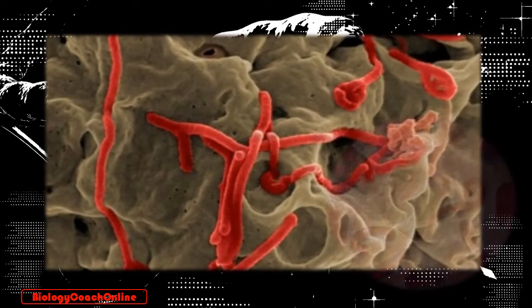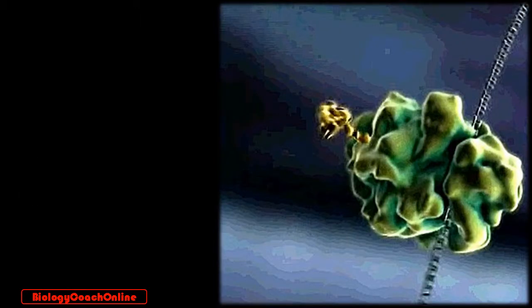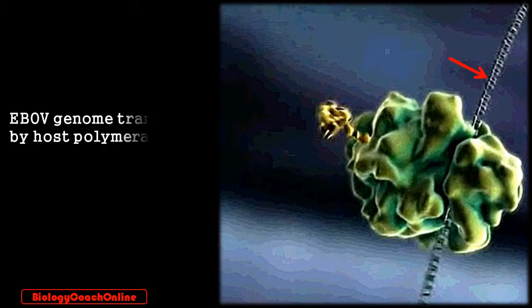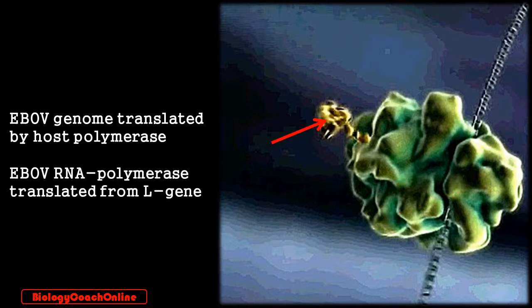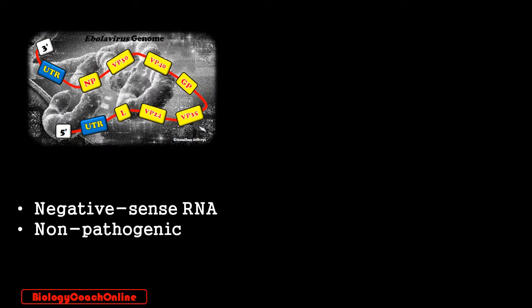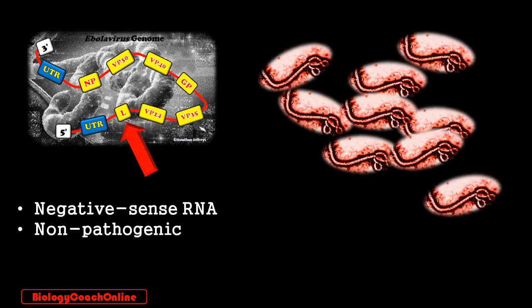Normal cellular mechanisms remove the protective envelope and capsid surrounding and protecting the viral genome. Once released from its protection, the viral genome is translated by the host RNA polymerase, yielding in turn the viral RNA polymerase — that's the L gene in the Ebola RNA genome. In essence, the virus hijacks the host machinery to start the process of viral replication. Because the Ebola virus genome is negative-sense RNA, it is in and of itself non-pathogenic.